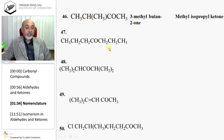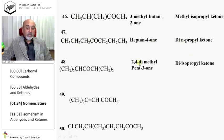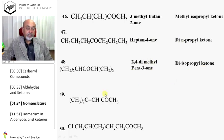This is heptane-4-one — carbons 1, 2, 3, 4, 5, 6, 7 — so it is heptane-4-one, or di-n-propylketone. 2,4-Dimethylpentane-3-one, or diisopropylketone.